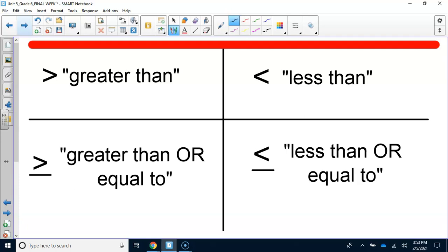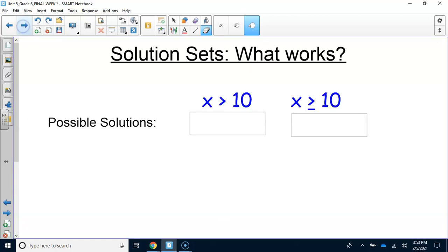When it has the line underneath it, that means it is also including that number. So if it said x is greater than or equal to 10, that means 10 would work there. So instead of it just being 11, 12, 13, 14, you would have 10, 11, 12, 13, 14, because it's that number or equal to that number, that number or more. All right, hopefully you pause the video, copy these down. Let's move forward.